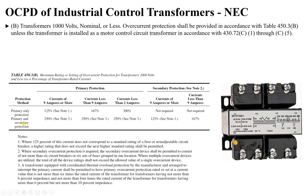However, this transformer type has a specific special case: overcurrent protection shall be provided in accordance with the table unless the transformer is installed as a motor control circuit transformer in accordance with NEC 430.72(C), items 1 through 5. Of these, item C4 is particularly important.